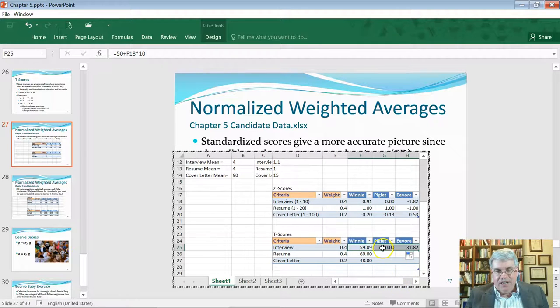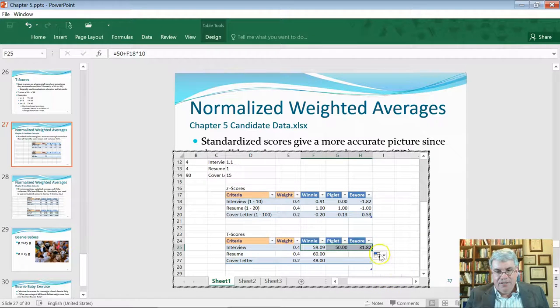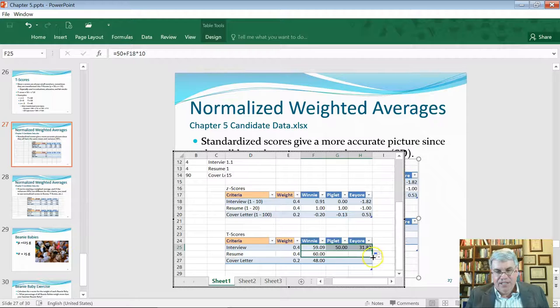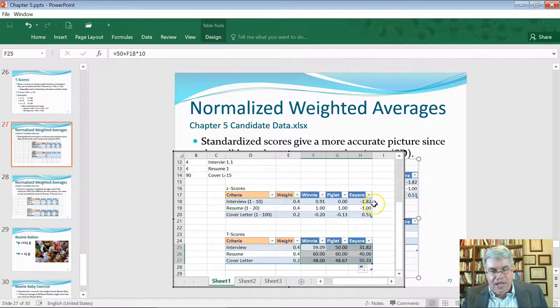There, we've got T-scores for them, and let's continue dragging it down. And now, we've got T-scores for everybody. So, Eeyores are below 50 except for his cover letter because that's the only thing he did above average in. So, now, we've got T-scores for all of Winnie and Piglet and Eeyore.